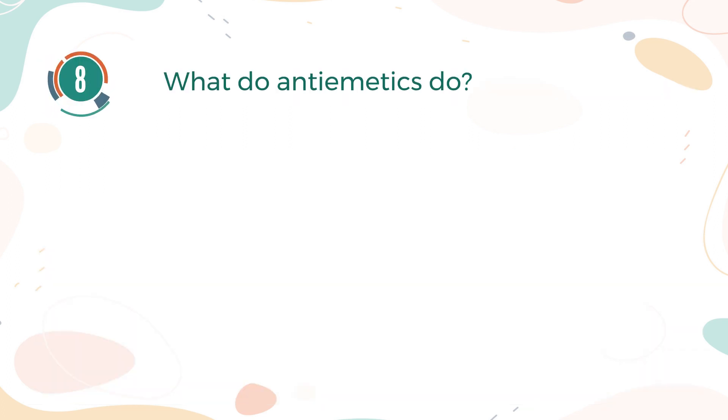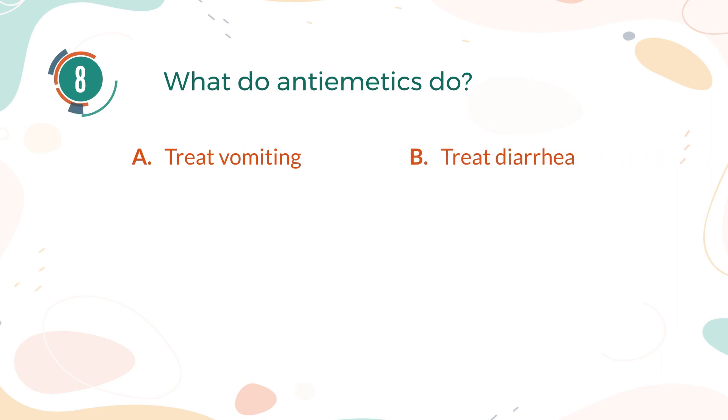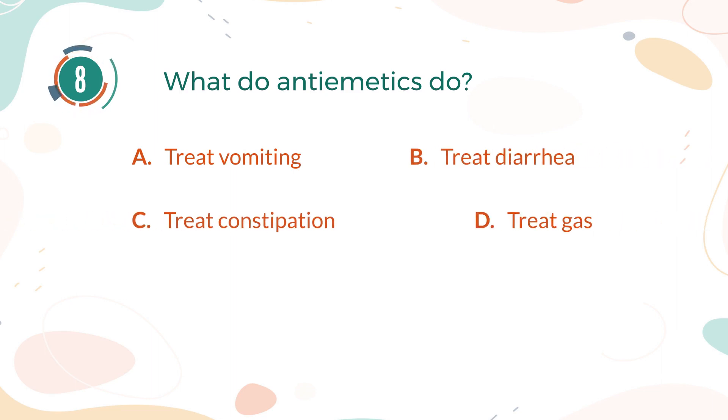Number 8. What do antiemetics do? A. Treat vomiting. B. Treat diarrhea. C. Treat constipation. D. Treat gas.